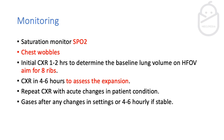For monitoring: check saturations on the monitor and observe chest wobbles — effective chest wall movement with ventilation is a good sign. Do an initial chest X-ray after starting high frequency to check how distended the lungs are. You're aiming for 8 ribs; if expansion is higher than that, reduce your MAP. Repeat the chest X-ray to assess expansion at four to six hours, and repeat again if there are any acute or new clinical changes in the baby.